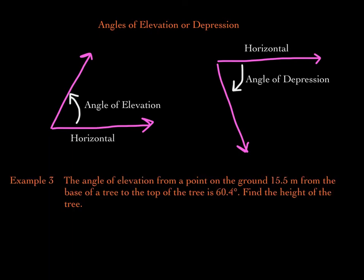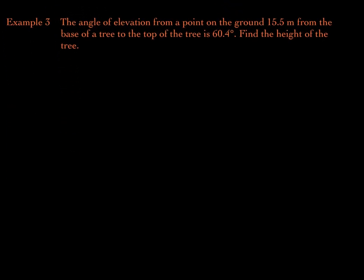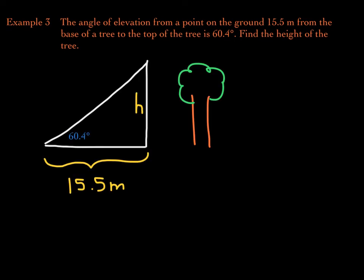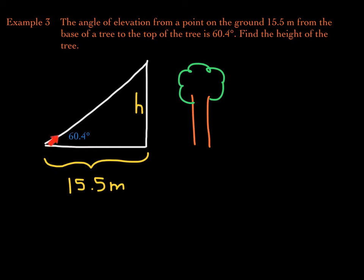The angle of elevation from a point on the ground 15 and a half meters from the base of a tree to the top of the tree is 60.4 degrees. Find the height of the tree. Drawing a picture is super helpful here. The angle of elevation is at the point on the ground where you're standing. From there to the base of the tree is 15.5 meters. You're looking toward the top of the tree — that's your line of sight — and the ground is your horizontal.